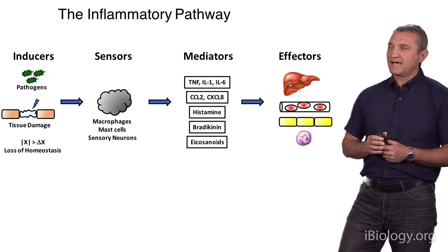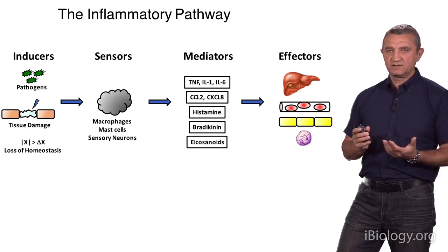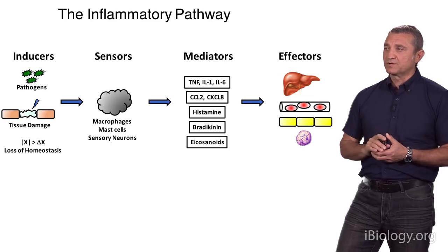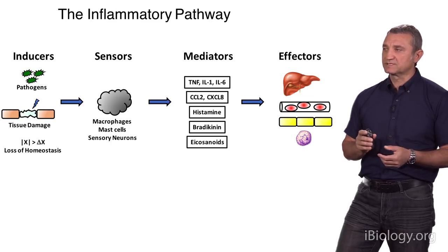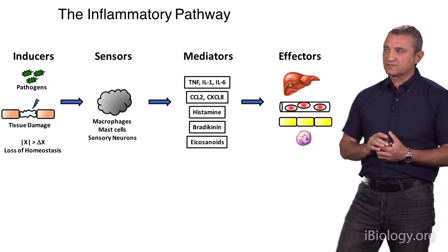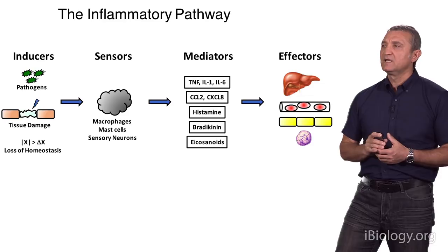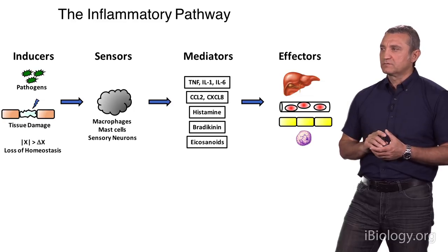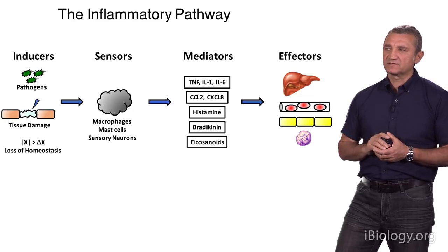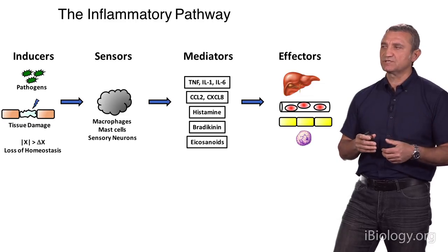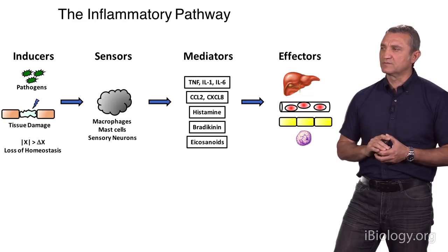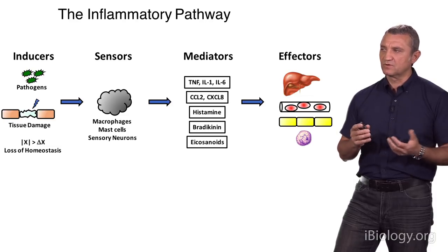Sensor cells produce inflammatory mediators, which include cytokines, chemokines, as well as bioactive amines like histamine, peptides like bradykinin, as well as lipid mediators called eicosanoids, which include for example prostaglandins. These mediators then act on various target tissues — almost any tissue in the body can be a target. Here I'm showing liver, vasculature, epithelial cells, and neutrophils. When mediators act on these effector cells, they cause appropriate changes in their state, function, or positioning.